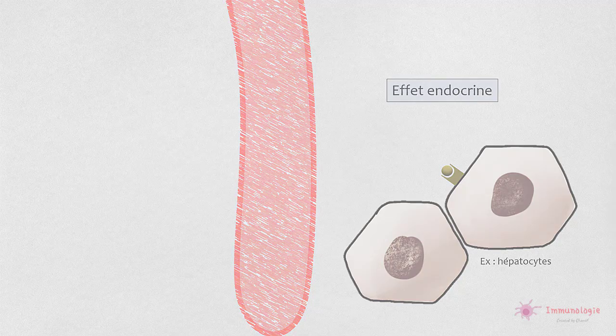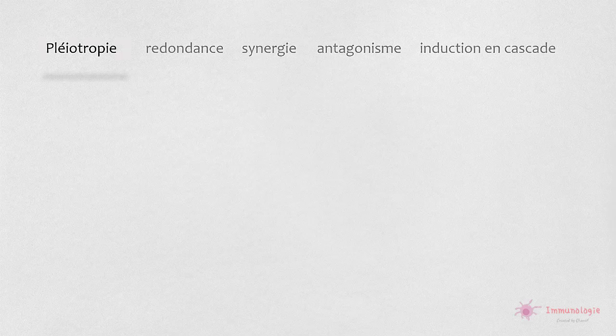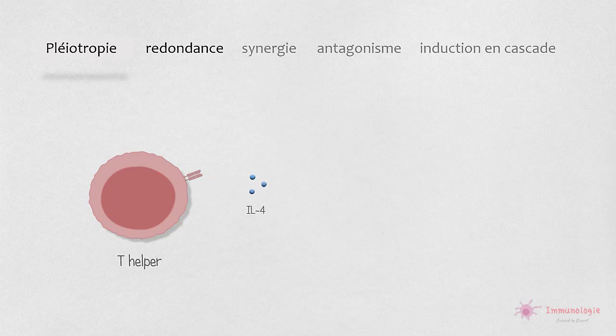Sur le plan fonctionnel, les cytokines peuvent présenter une pléotropie, une redondance, une synergie, un antagonisme et une induction en cascade. La pléotropie signifie qu'une seule cytokine peut avoir de nombreuses actions différentes.